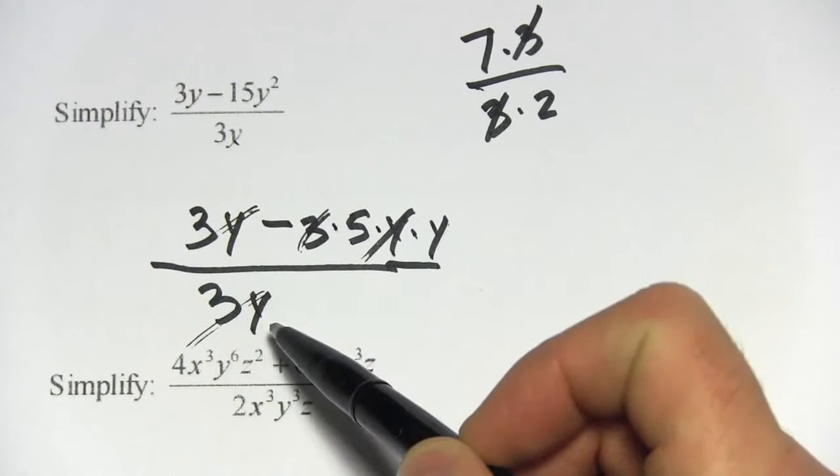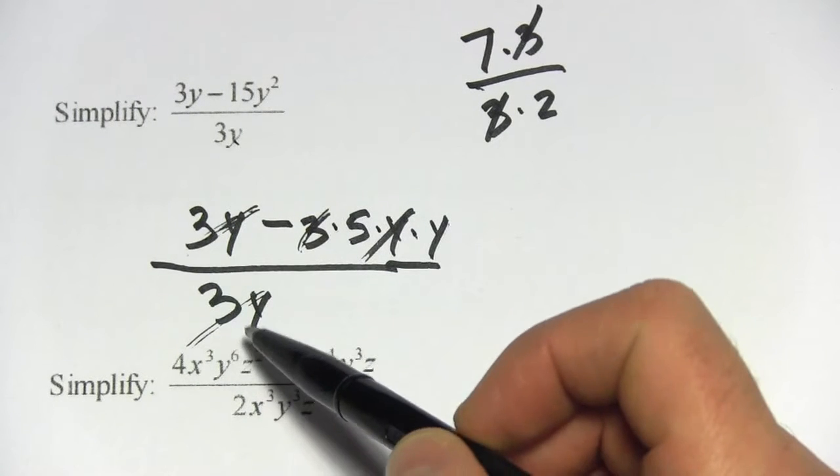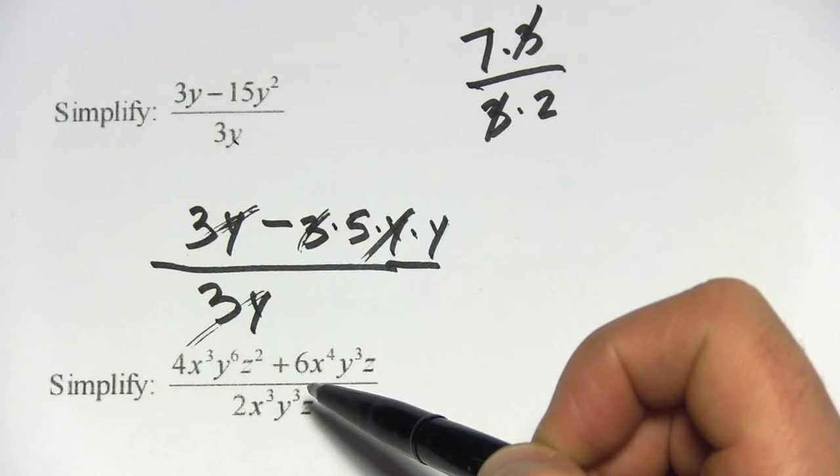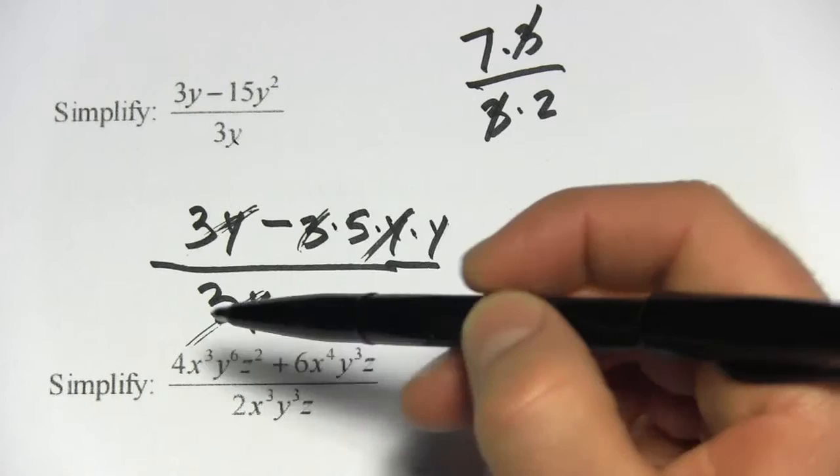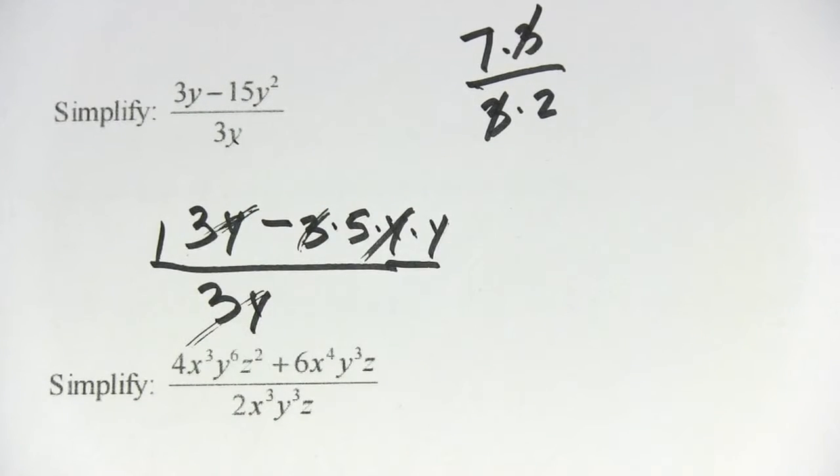Now we have to be a little bit careful because we cancelled out this first term. It doesn't actually disappear. Canceling is really division. So 3y divided by 3y would leave a 1, so we're going to put a 1 up there.